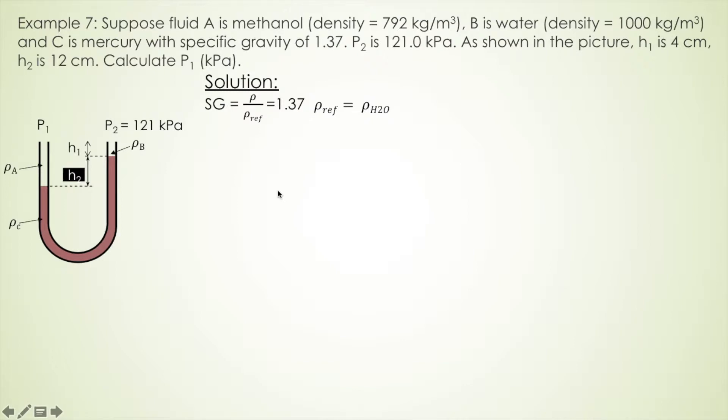The specific gravity equation is the density of the substance divided by the density of the reference, and we can write down assumption that the reference density is the water density at 4 degrees Celsius at 1 atm. Given that density of water is 1000 kg per cubic meter and then times the specific gravity, then we get the density of mercury.